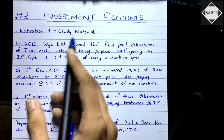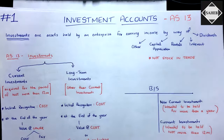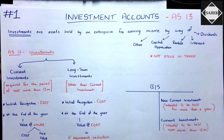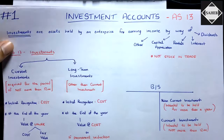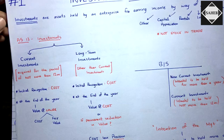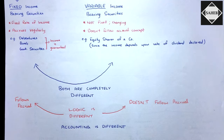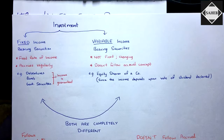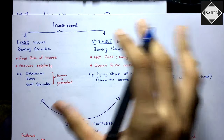In this video we are going to solve Illustration One of the study material. In the previous video, the first video of Investment Accounts, we discussed the concepts of the chapter — the meaning, Accounting Standard 13 which deals with accounting for investments, and the classification of investments as per AS 13: current investment and long-term investment, and their valuation.